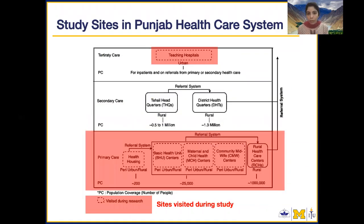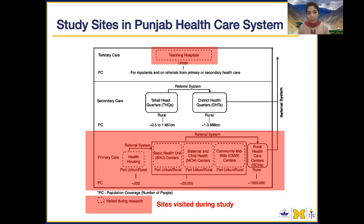For the purpose of our study, we conducted interviews in the primary health care system. In Punjab, there are three levels of health care. The first is primary care, the second is secondary care, and the third is tertiary care. Primary care is the most basic level, given to the community through health houses and basic health units.